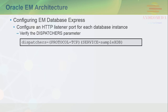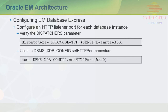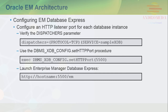To activate EM Database Express in a database, verify that the dispatcher's initialization parameter has at least one dispatcher configured for the XMLDB service with the TCP protocol. Use the setHTTP procedure in the dbmsxdbconfig package to configure a port on the server, and connect to the EM Database Express console with the URL shown in the slide. Substitute the hostname of the server and the port number you set using the setHTTP port procedure in the URL.